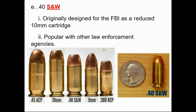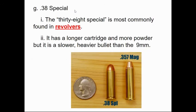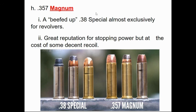A .40 S&W was originally designed for the FBI and is popular among law enforcement agencies. Notice the increasing size with increasing caliber number. A .45 is larger still. The .38 Special is smaller than the .45 but is commonly found in revolvers — if you recovered this ammunition, you might infer it was used in a revolver. The .357 Magnum refers to its diameter, but Magnum means it has more gunpowder than normally expected, producing a larger explosion.